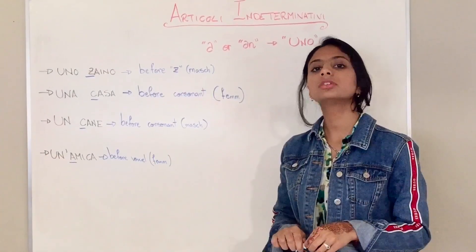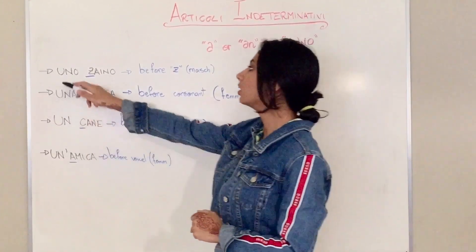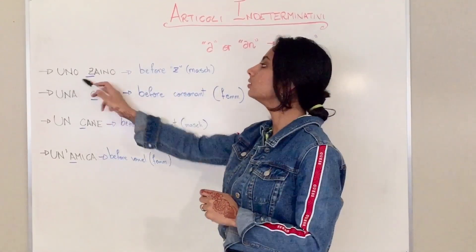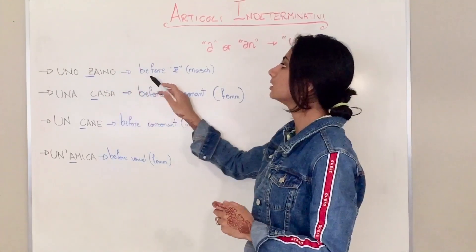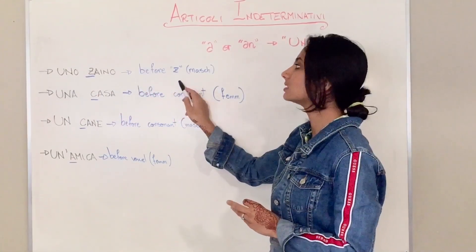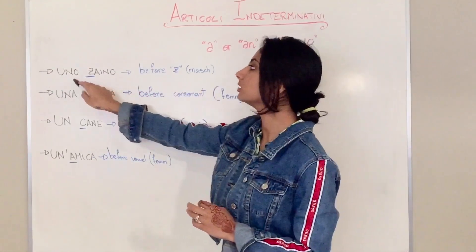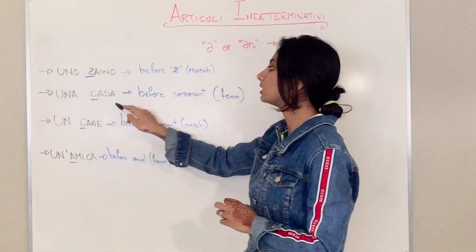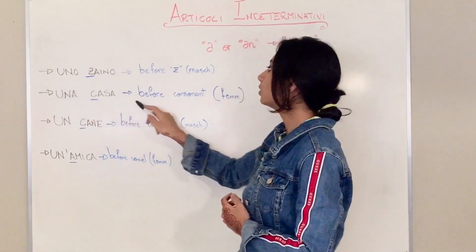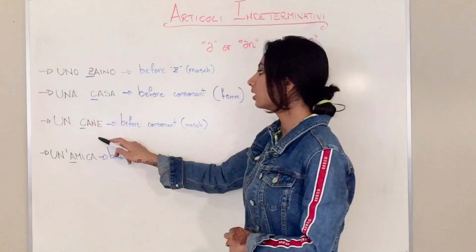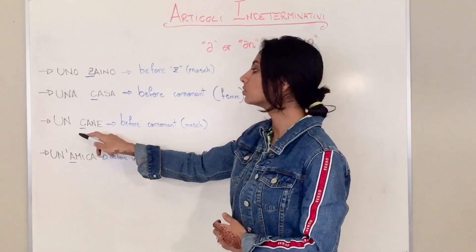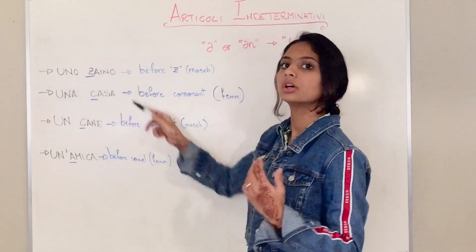Let's take a look at some examples. I'm going to use the same examples from the last video. Uno zaino — zaino means school bag — it's uno. Why? Because it starts with Z, and it's masculine. Then una casa — it's una because there is a consonant and it's feminine. Un cane — it's un because cane starts with a consonant and it's masculine, so we use un instead of uno.